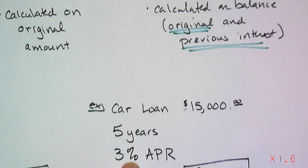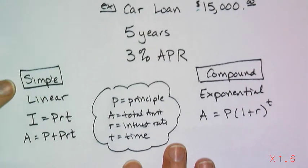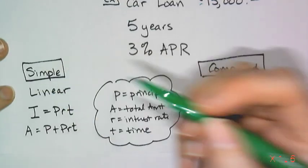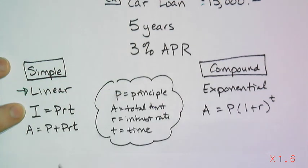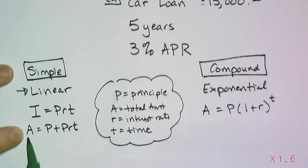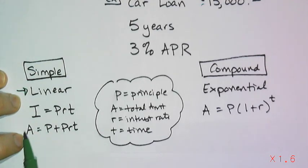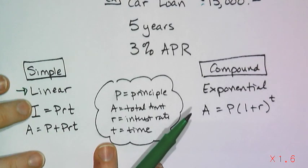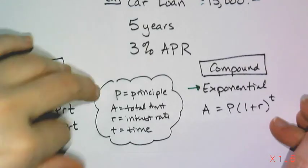The example is a $15,000 car loan for five years at 3% APR — APR stands for annual percentage rate. Here are the formulas: simple interest is a linear relationship. Interest I equals principal times rate times time. Total amount A equals principal plus interest accrued. So simple interest is like a linear equation.